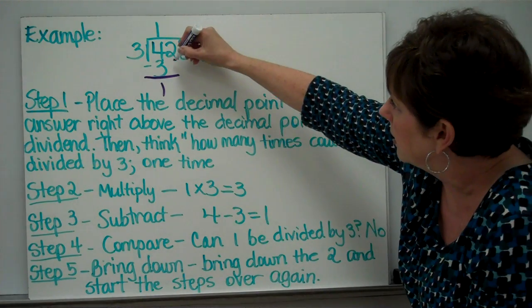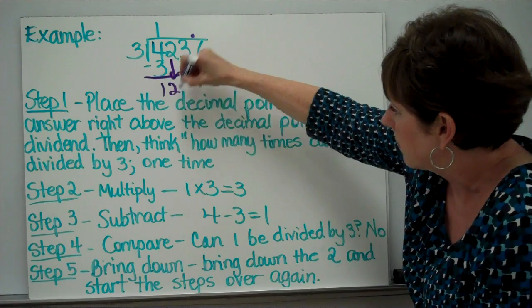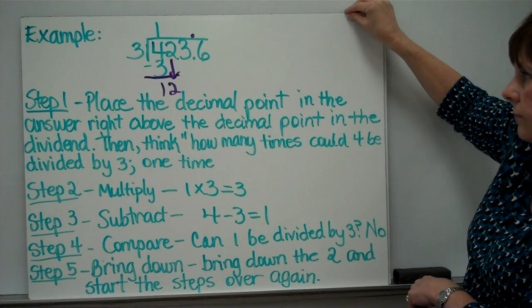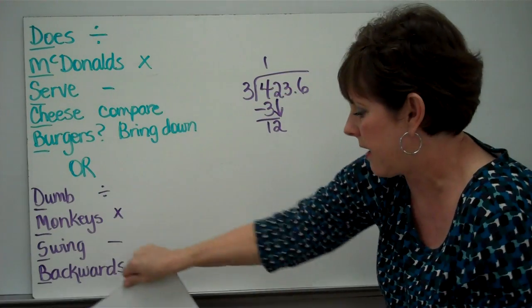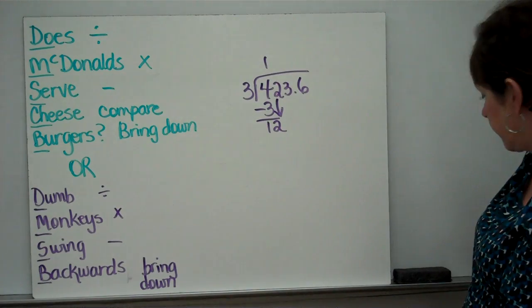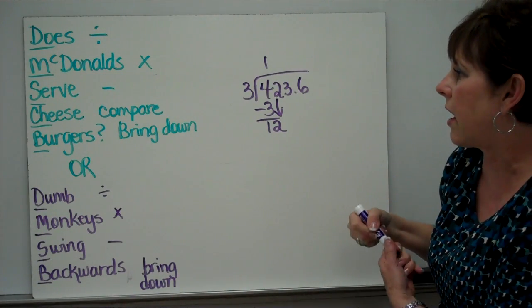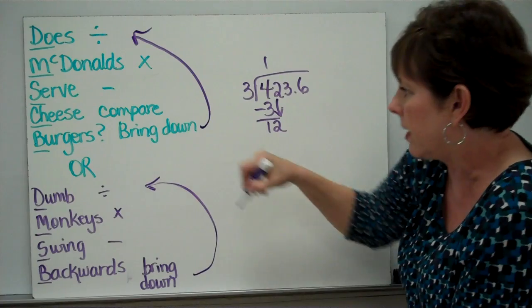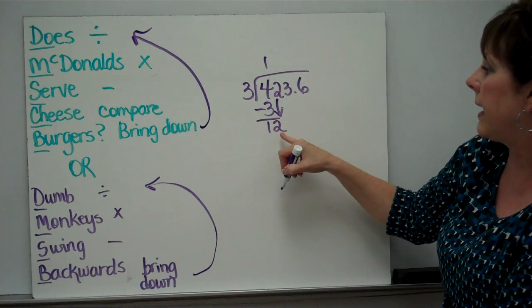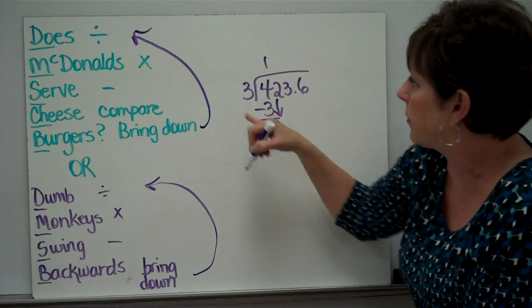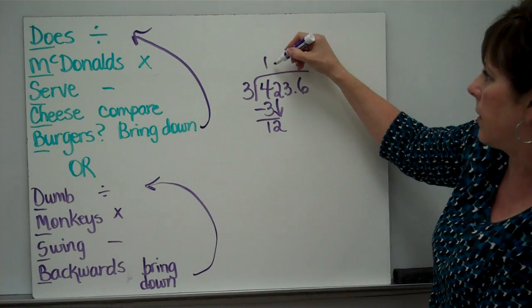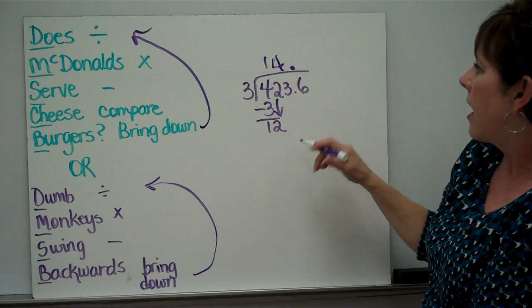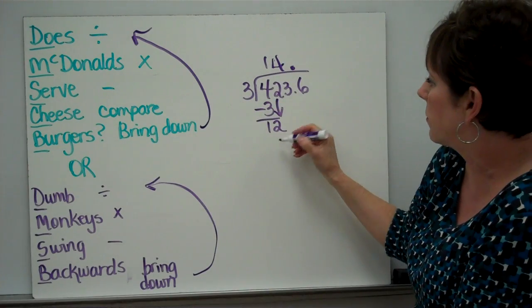Is there another number to bring down? Absolutely. Bring this down. And then we start the steps all over again. I've put the saying up there along with the symbols. This is where we ended. We're going to start over again. How many times could 12 be divided by 3? I know that 12 could be divided by 3 four times. And there's my decimal, by the way. 4 times 3, I'm multiplying. 4 times 3 is 12.